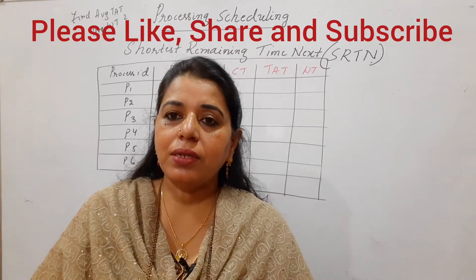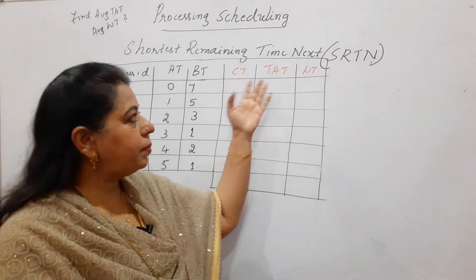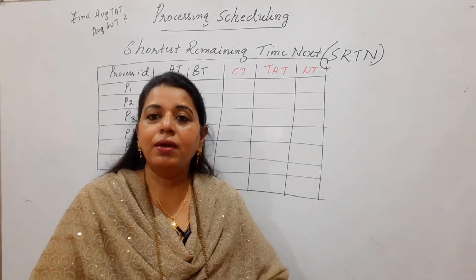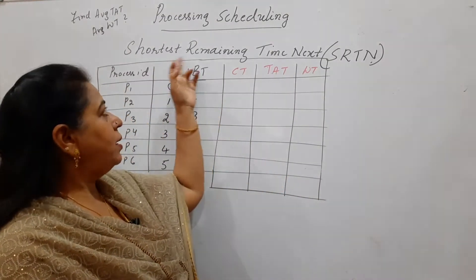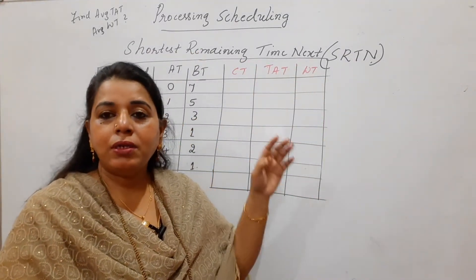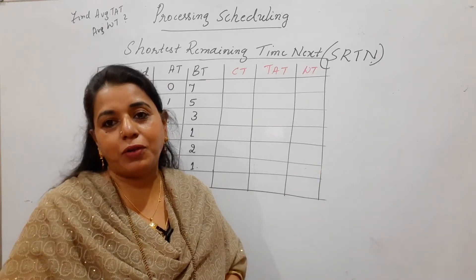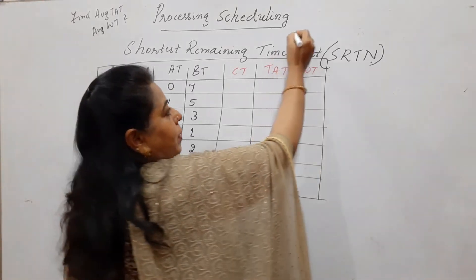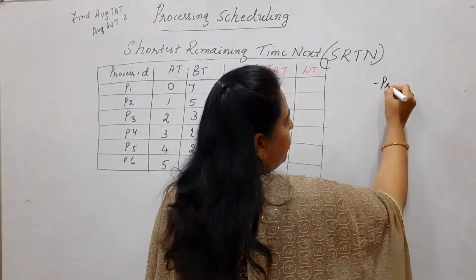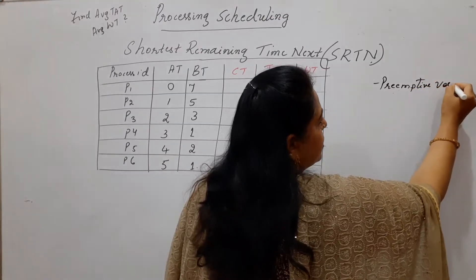After the shortest job first algorithm, the next in the list is the Shortest Remaining Time Next. In some textbooks you can see the name as Shortest Remaining Time First — both mean the same. This Shortest Remaining Time Next is a preemptive version of Shortest Job First. This is the first important feature you always have to remember: this is the preemptive version of SJF.